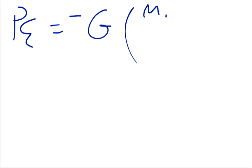So here we're going to use the new equation that we got for potential energy, which says that potential energy is equal to the negative gravitational constant times the mass 1 times mass 2 divided by the radius.